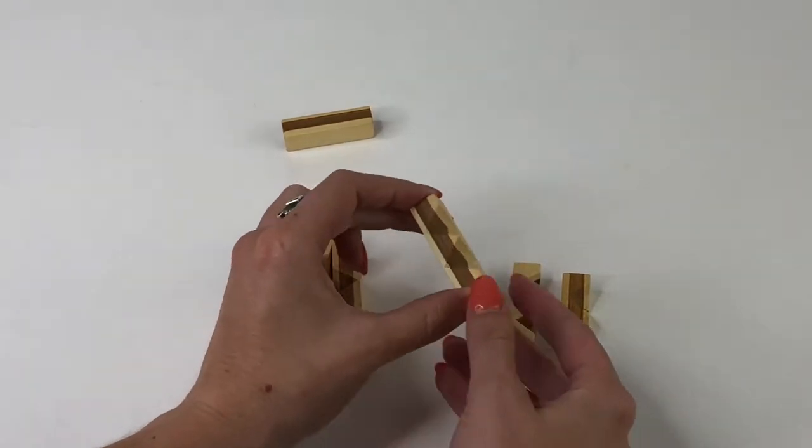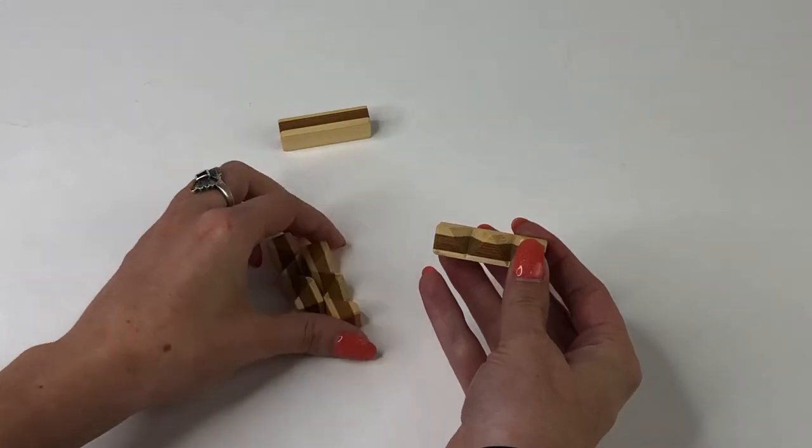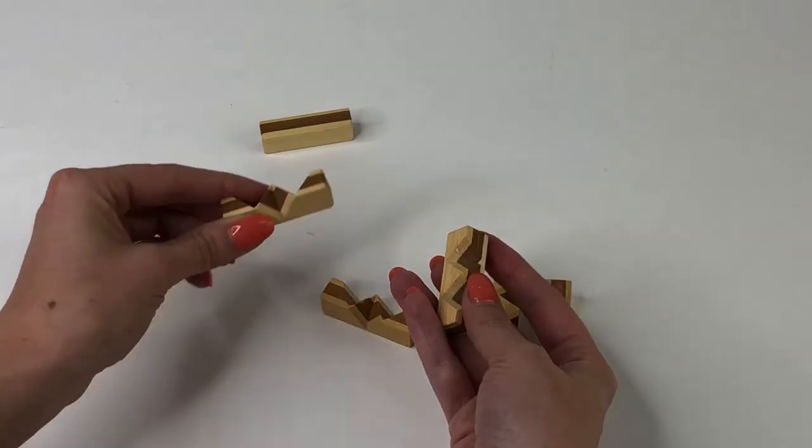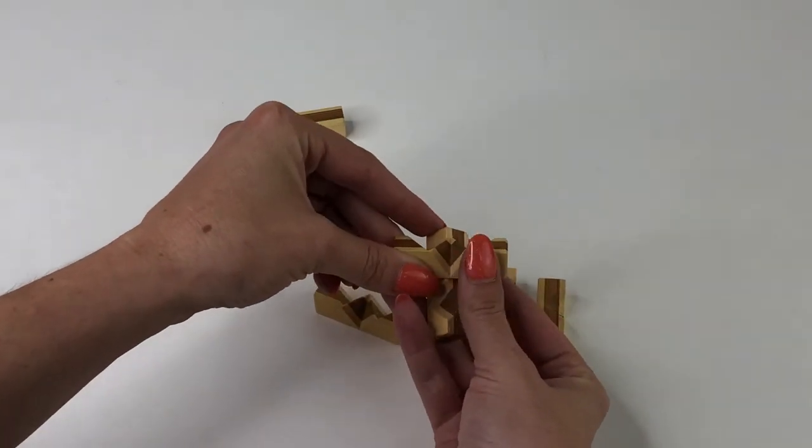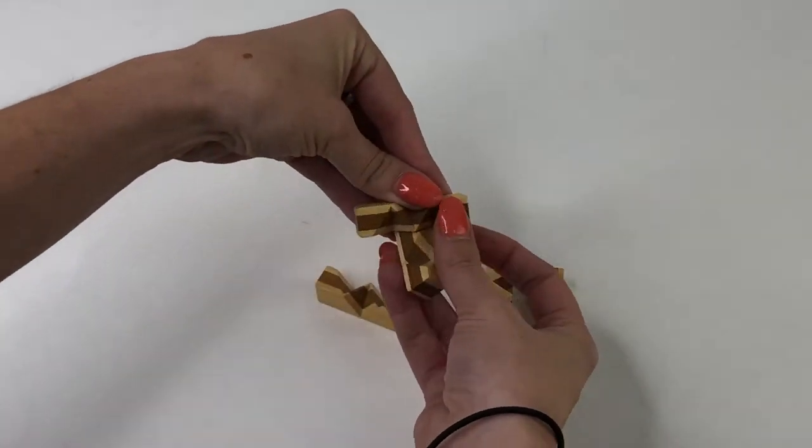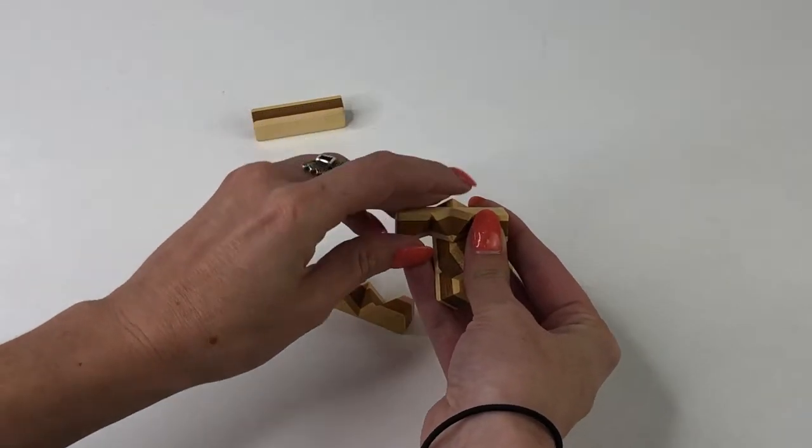You're going to start with a two divot piece and you're going to take one of your three divot pieces and line it up with that single-sided divot facing in, so the divots are facing up and you have two other divots facing in.